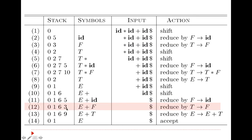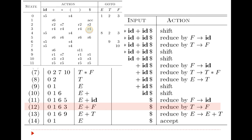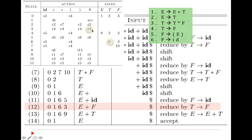Then the next is 3 and dollar. 3 and dollar gives reduce by rule number 4. So we reduce by rule number 4, that is t gives f. Here f is replaced by t, and state 3 is popped from the stack.